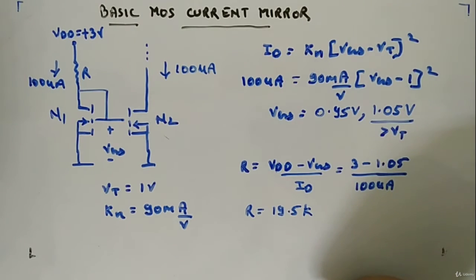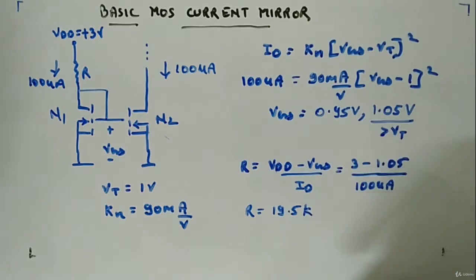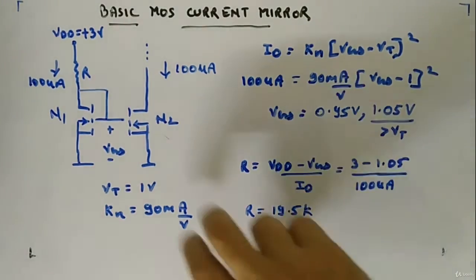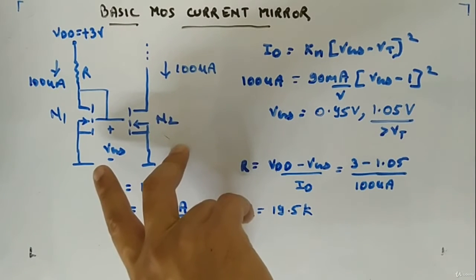Now we have to keep them in saturation, just like we had to keep a BJT in active region. They can be matched in the MOSFET case, and they can't be matched.